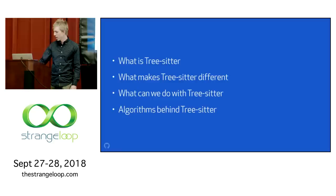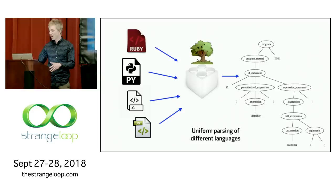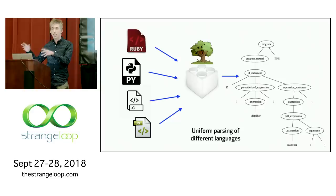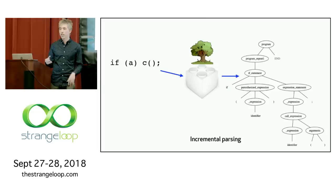So first, what is TreeSitter? TreeSitter is a library for parsing source code. It's written in C and C++, and it's designed to be used in applications like Atom that work with code written in many different languages. You can use TreeSitter to parse files written in all different languages and produce syntax trees that all have the same interface. But the really unique thing that TreeSitter does is what's called incremental parsing — once you've parsed the file, you can edit the file and TreeSitter can give you a new syntax tree that reflects the edit without having to reparse the whole file.